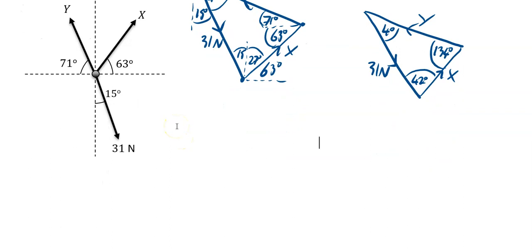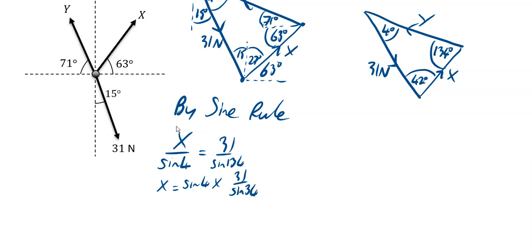By the sine rule, we'll find x. x divided by sine of its opposite angle is 4, equals my 31 and its opposite angle is 134. So x is going to equal sine of 4 times 31 over sine of 134. So x works out to be 3.01 newtons to three sig figs, that's what they specified.